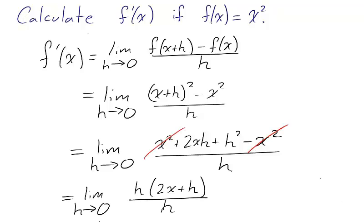We factor h from the numerator and cancel it, and we're left with a polynomial so we can use direct substitution to find 2x.